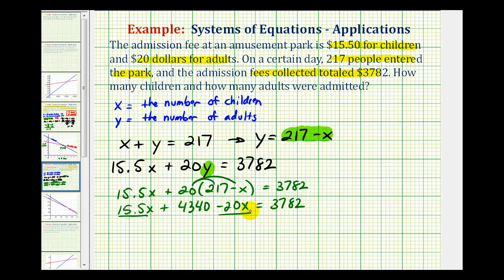Let's combine our like terms. 15.5x minus 20x is going to be negative 4.5x. Now we'll subtract 4,340 on both sides.